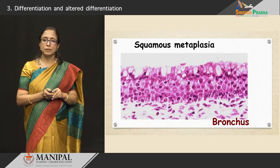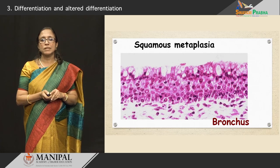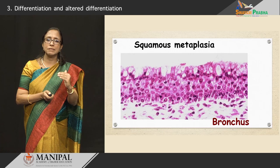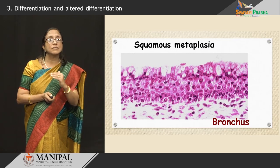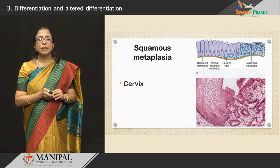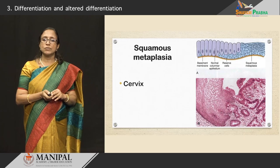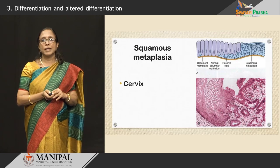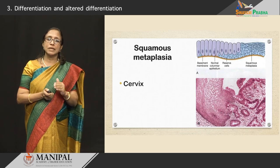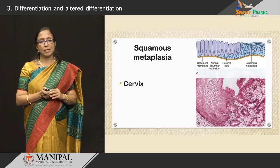Another example is in the bronchus, where you can see that squamous epithelium has totally replaced the pseudostratified epithelium, which is seen as a single layer on top. Another example is the cervix — you can see the endocervical tissue lined by columnar epithelium, but immediately after that you can see the junction where it becomes stratified squamous epithelium. This again is squamous metaplasia occurring in the cervix.